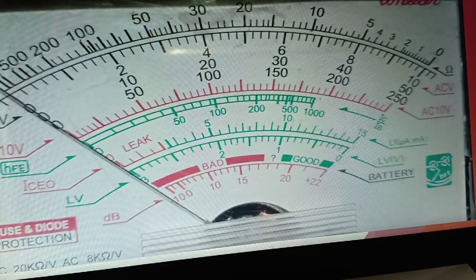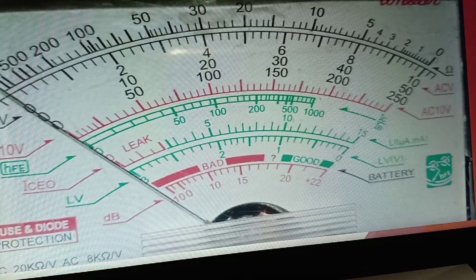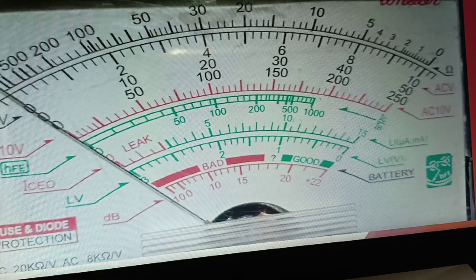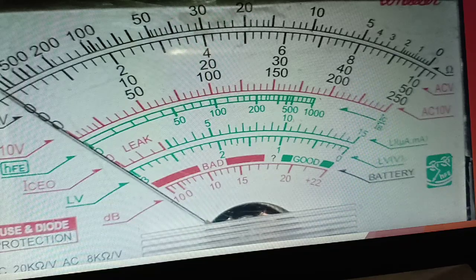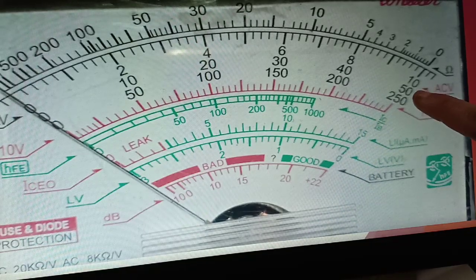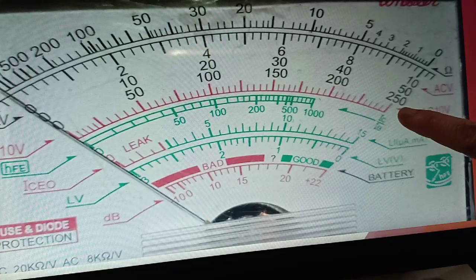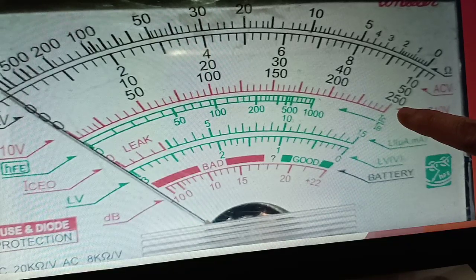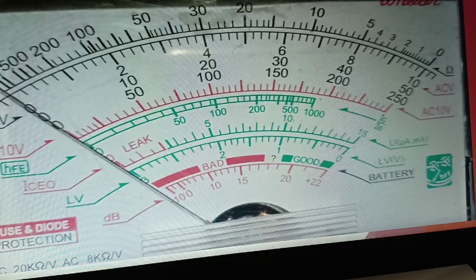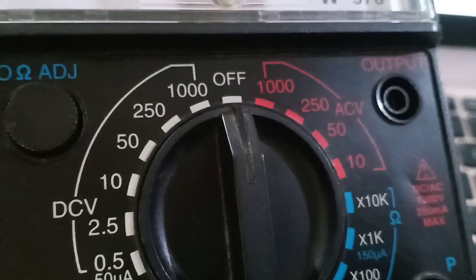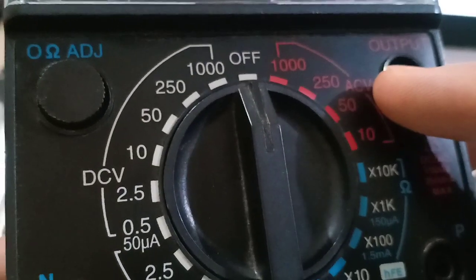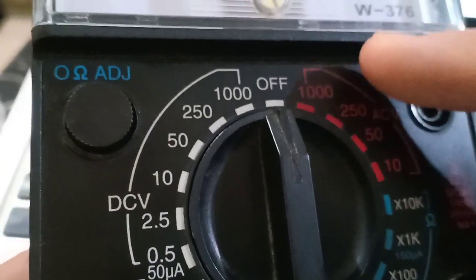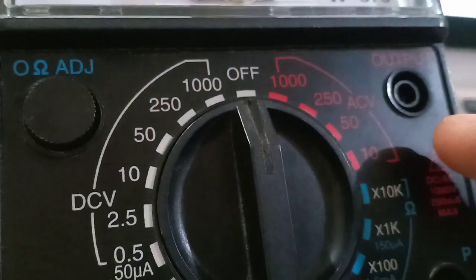As you can see, we have here the scale of our multi-tester. You can see the numbers 10, 50, and 250. In our selector knob, or selector switch, we can select from 10, 50, 250, and 1000 ACV.